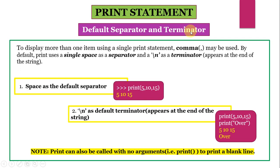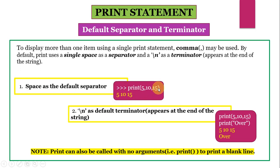Default separator and terminator. You can display more than one item using a single print statement — for that we use a comma. By default, print uses a single space as a separator and \n as a terminator, which appears at the end of the print statement. So suppose I want to display 5, 10, and 15 using a print statement. If I do not give any separator, it will take single space as the default separator. You can see the output is 5, 10, and 15, all three numbers separated by space.